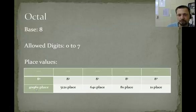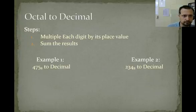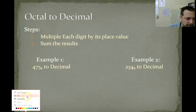We're not going to be using that one much. Converting octal to decimal. You multiply each digit by its place value. Then sum the results. So the directions are always the same for these.